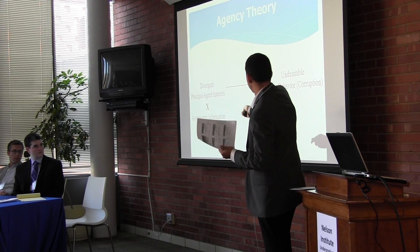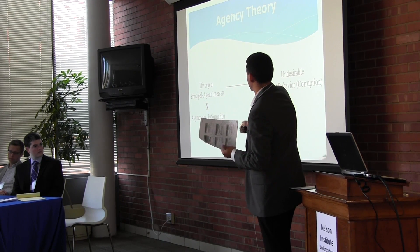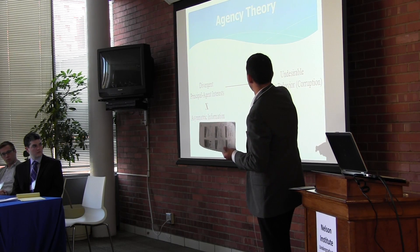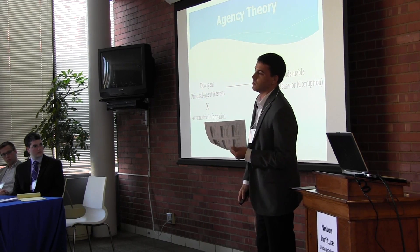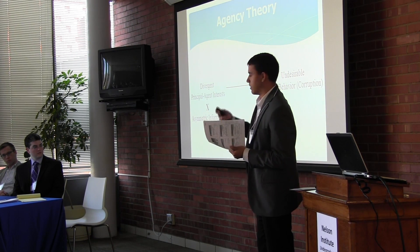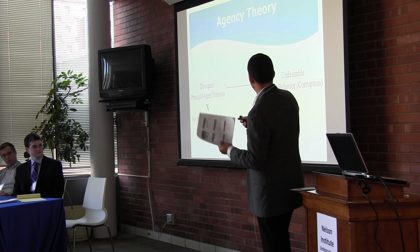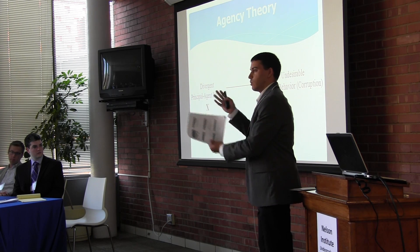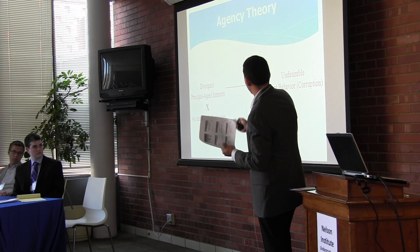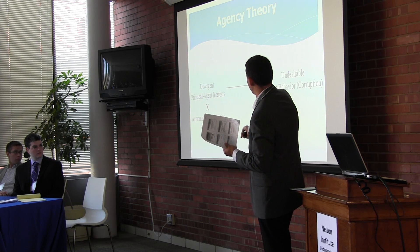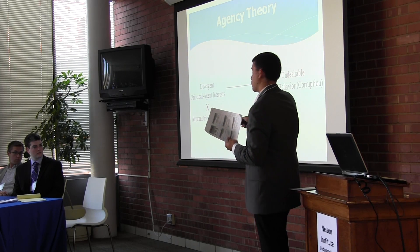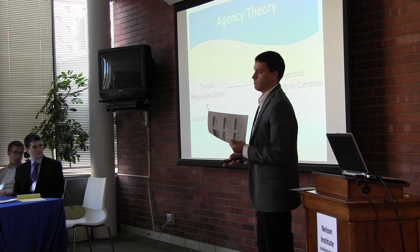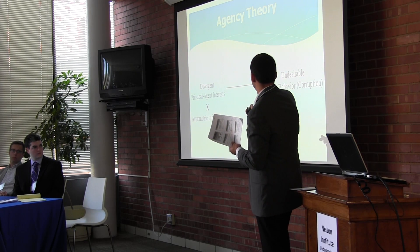Asymmetric information is an antecedent condition that magnifies this causal relationship. Asymmetric information is a phenomenon in which it's difficult for principals to adequately monitor their agents — there's not an equality of information. So given this inability to adequately supervise agents, there will be more corruption in this environment of asymmetric information.